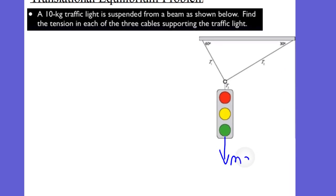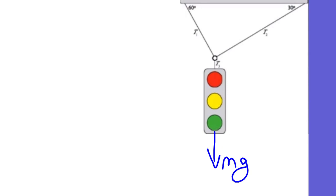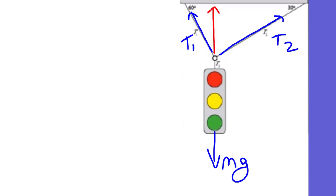We have a mass times gravity of our object from the center of mass of that object, which would be 10 kilograms times 9.8 meters per second squared. We also have tension one and tension two. Tension one and tension two are broken up into components. Tension one is going to be what we call tension one sine, opposite that 60 degrees, and tension one cosine.